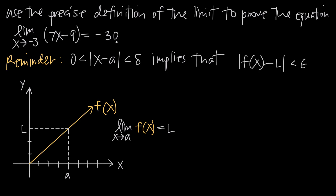We already know the value of the limit, and intuitively this should make sense because the easiest way to evaluate a limit is with substitution. If x gets really close to negative 3 — in fact, if x equals negative 3 — we plug negative 3 into the function: 7 times negative 3 minus 9 equals negative 21 minus 9, which is negative 30.